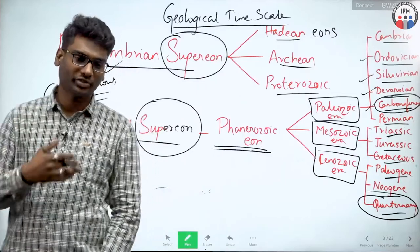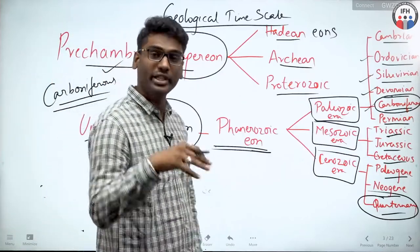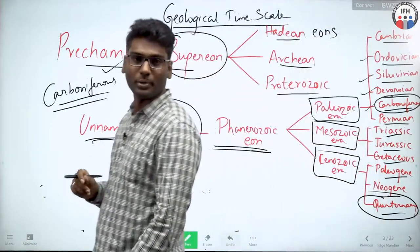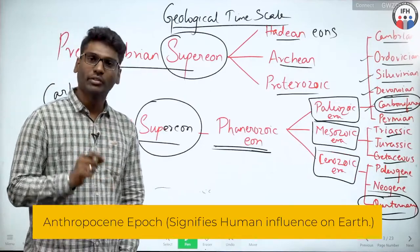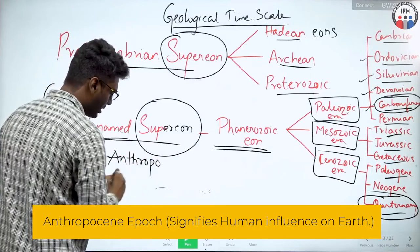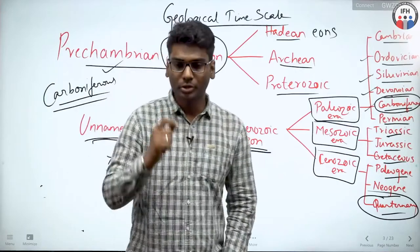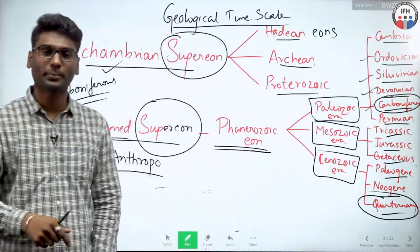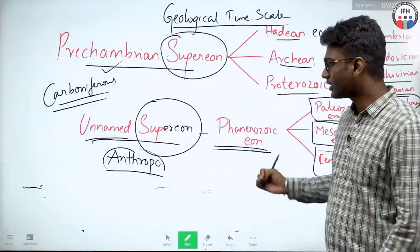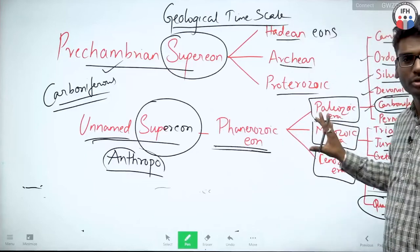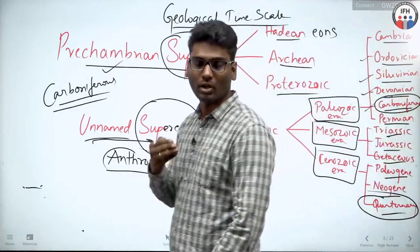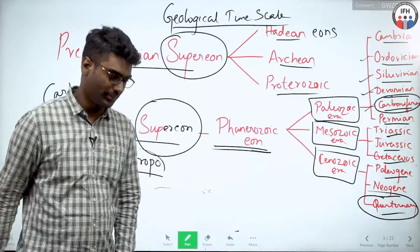The Quaternary period is further divided into epochs, and we are in an epoch called the Anthropocene epoch — recently designated. 'Anthropo' means human, so it signifies human influence in this particular epoch, named after human evolution. I wanted to explain this broadly so you will have an understanding when I speak about the continental drift theory proposed by Alfred Wegener.